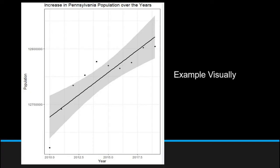In plotting that data you would see a graph similar to this one which will show the linear relationship between the increase in years and the corresponding increase in population.